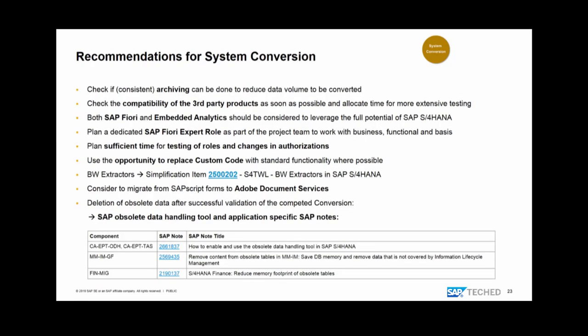Some more things for system conversion: archiving is always a good idea — the less data you have to move, the shorter the runtime and downtime, and the less data you have to clean. If you can archive old periods and old years you no longer need, you eliminate the need to cleanse that data. Regarding third-party products and SAP add-ons: SAP add-ons listed on our price list always have a successor in S/4HANA, usually available within the first three months after initial release shipment.